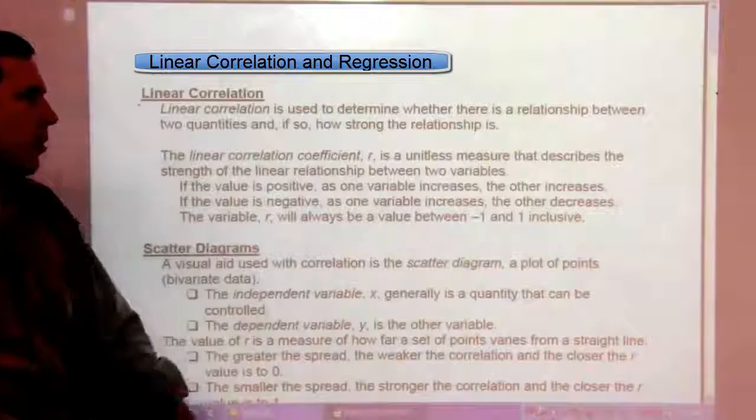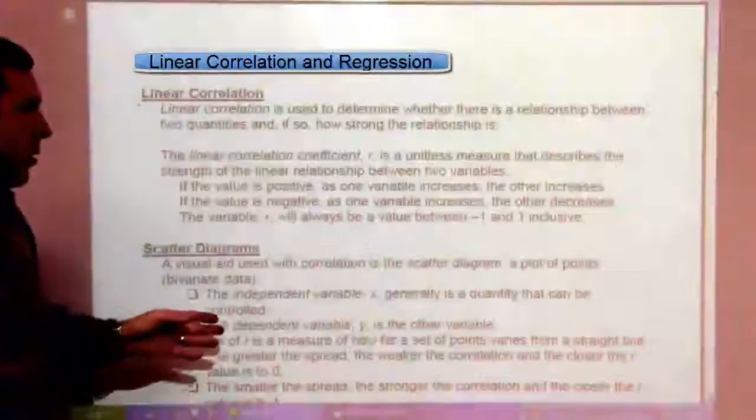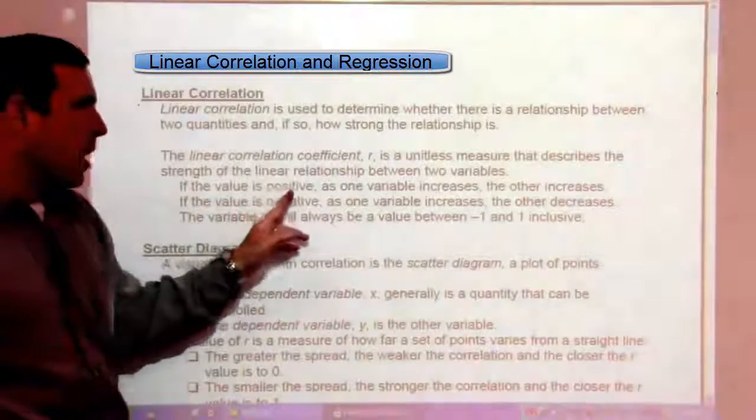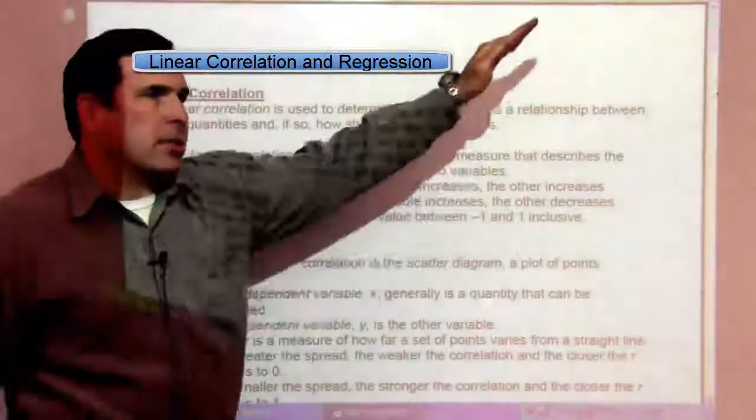The linear correlation coefficient R is a unitless measure that describes the strength of the linear relationship between two variables. If the value is positive, as one variable increases, the other increases.